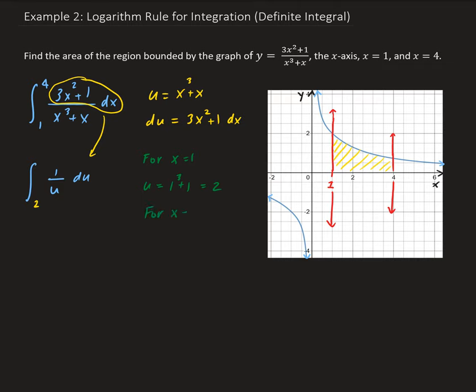For x equals 4, u is going to be equal to 4 cubed plus 4. And that's going to give us 68, and so we have 68 here.